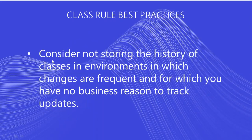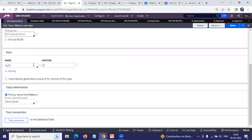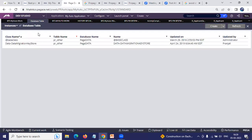The third recommendation is to consider not storing the history of classes in environments where changes are frequent and for which you have no business need to track updates. For any change you make on a particular class instance, it is going to save records. What Pega is suggesting is that if you don't want to have a dedicated history of those particular changes, you don't save it.